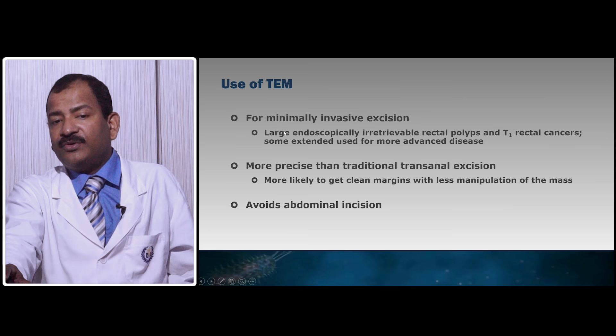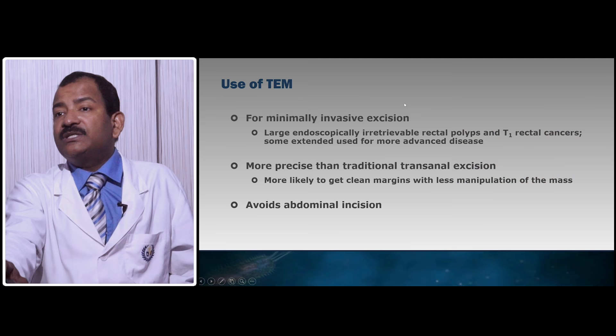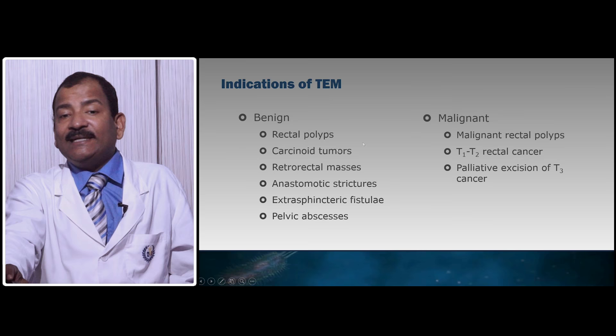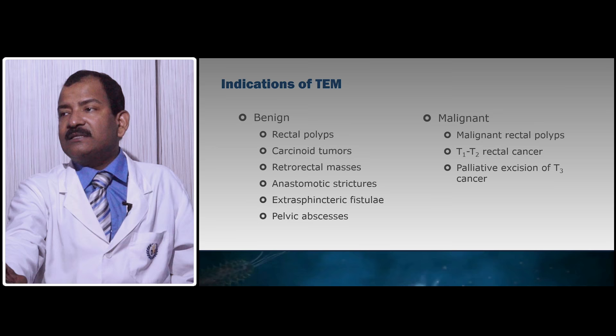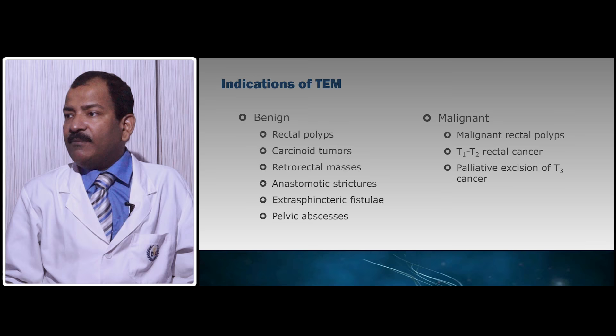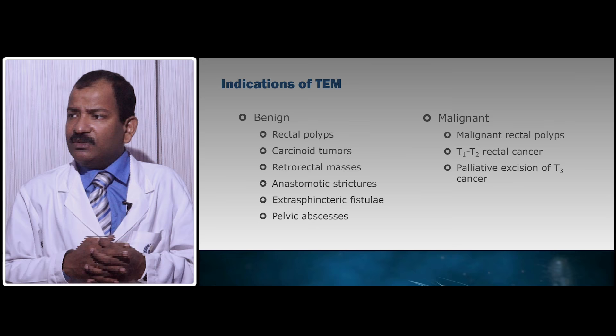TEM — transanal endoscopic microsurgery — is one of the beautiful endoscopic procedures invented by Professor Gerhard Buess. It is for rectal tumors and rectal pathology. Benign indications include rectal polyps, carcinoid tumors, retrorectal abscesses, anastomotic strictures, extra-sphincteric fistulas, and pelvic abscesses. Malignant indications are at the extremes: T1, T2 cancer without nodal metastasis, or in terminally ill patients where no cure is possible — in those situations palliative channeling can be performed with TEM.